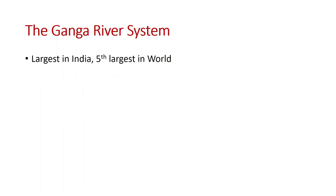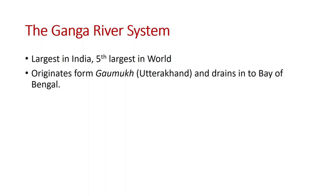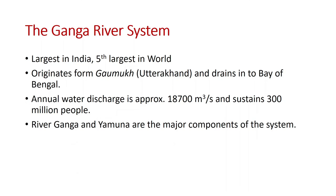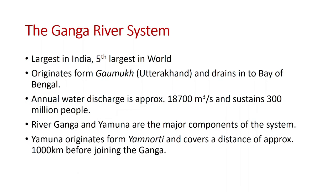The Ganga river system is the largest in India and fifth largest in the world. It originates from Gomukh, Uttarakhand — though there is some controversy whether it originates from Gomukh or from the Mansarovar lake. It drains into the Bay of Bengal. The annual water discharge is approximately 18,700 cubic meters per second and it sustains 300 million people. River Ganga and Yamuna are the major components of this system. The Yamuna originates from Yamunotri and covers approximately 1,000 kilometers before joining the Ganga at Allahabad.